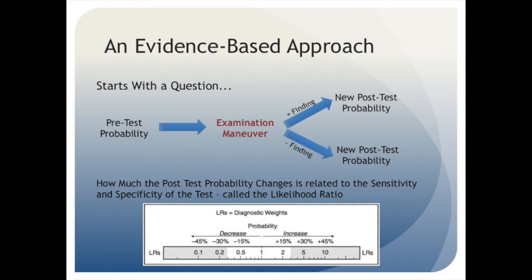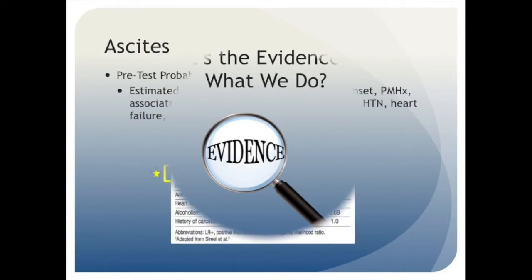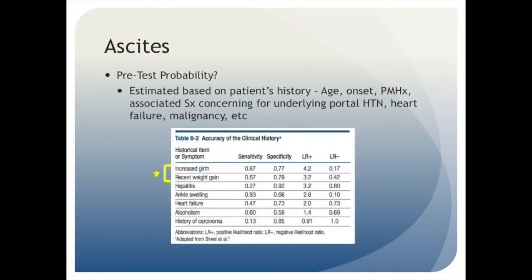Let's see how this applies to the patient we're evaluating for ascites. So we start by estimating our pre-test probability, which is our best guess as to whether or not we think our patient has ascites, and how sure we are about this, expressed as a percentage.